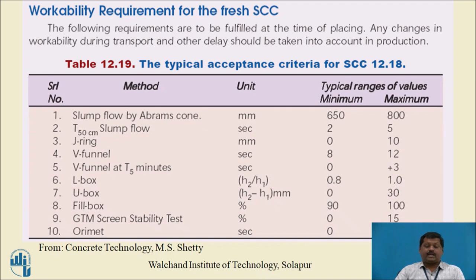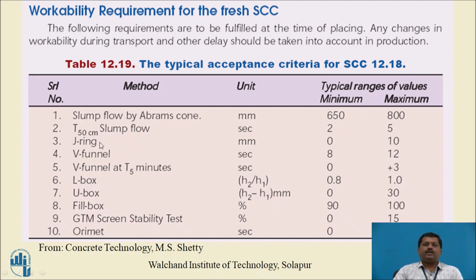These are the workability requirements for fresh self-compacting concrete. Slump flow by Abrams cone: minimum 650 mm, maximum 800 mm. Slump flow measured by time (T500): minimum 2 seconds, maximum 5 seconds. J-ring test measured in mm: maximum 10 mm. V-funnel test measured in time: minimum 8 seconds, maximum 12 seconds.